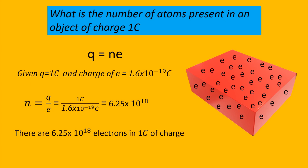By doing this problem we can understand what is the number of atoms present in an object of charge 1 coulomb. If any object is accumulated with a charge of 1 coulomb, then the object will have n number of fundamental charges e. That is, q equals ne. We know q equals 1 coulomb and the charge of an electron is 1.6 times 10 to the power minus 19 coulomb. Then n equals q divided by e, which equals 1 coulomb divided by 1.6 times 10 to the power minus 19 coulomb, which equals 6.25 times 10 to the power 18. So there are 6.25 times 10 to the power 18 electrons in 1 coulomb of charge.